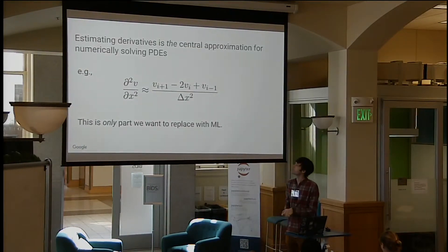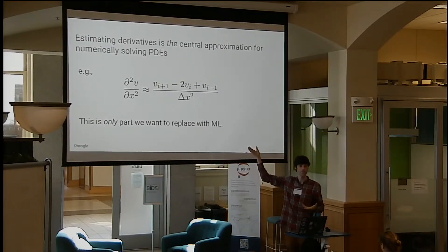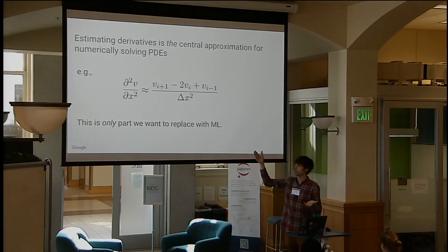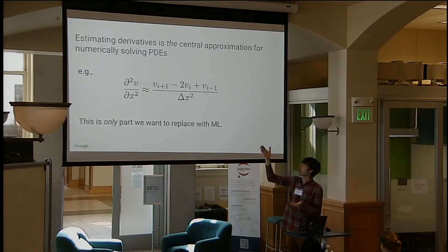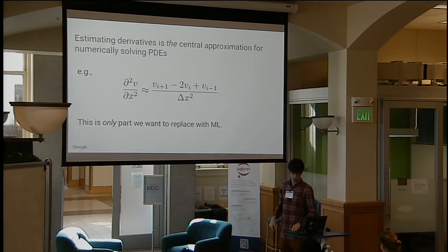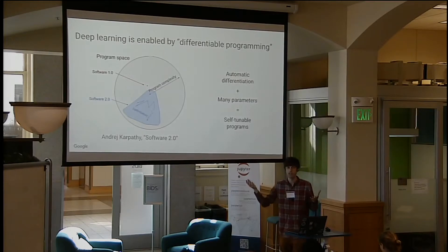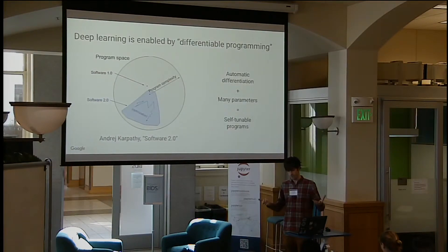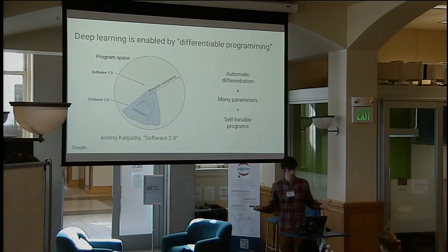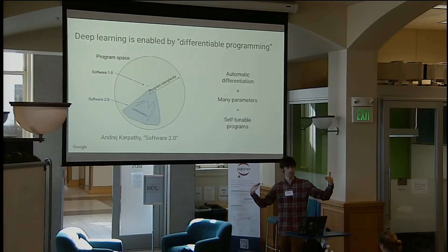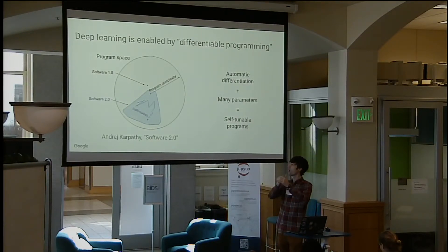The way we want to do that is by plugging machine learning into estimating the spatial derivatives — this is the key approximation for solving PDEs. We want to keep the physics we already know, but plug in machine learning. We'll use deep learning, which is part of the broader class referred to as differentiable programming — the idea that you can write your computer program in a differentiable way, so you can optimize a much broader space of computer programs from data, instead of just the few algorithms you'd pick out by hand.